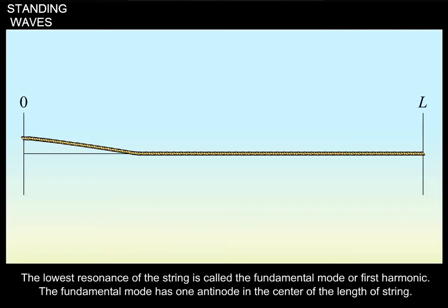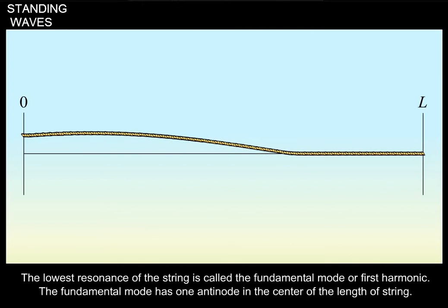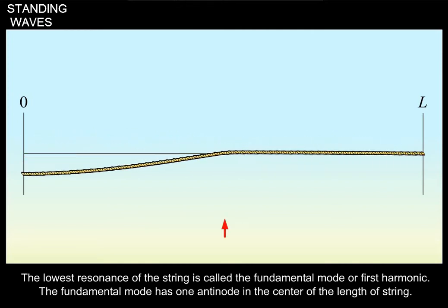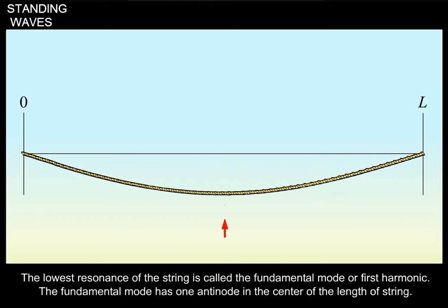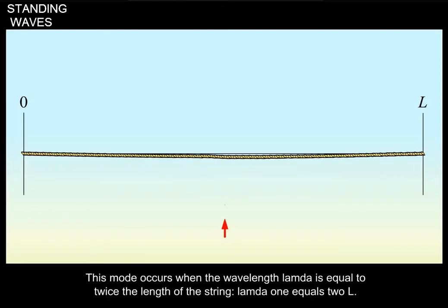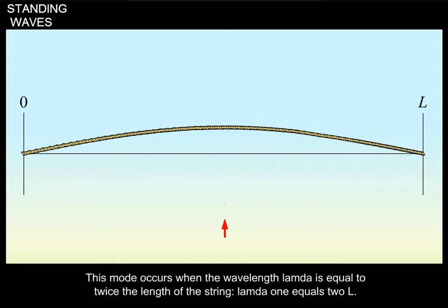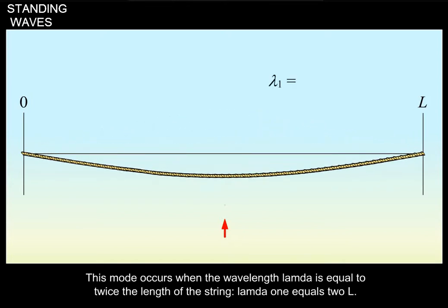The lowest resonance of the string is called the fundamental mode or first harmonic. The fundamental mode has one antinode in the center of the length of string. This mode occurs when the wavelength lambda is equal to twice the length of the string, written lambda 1 equals 2L.